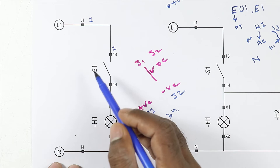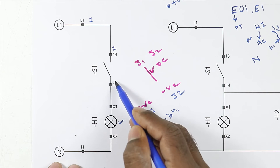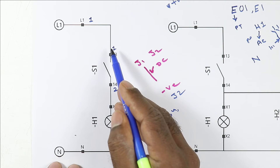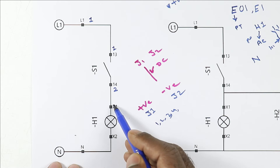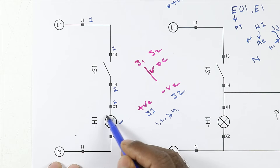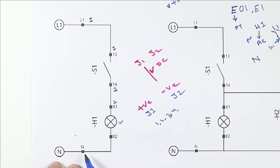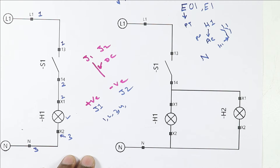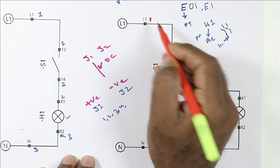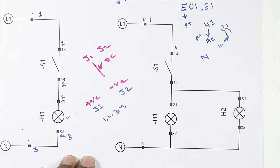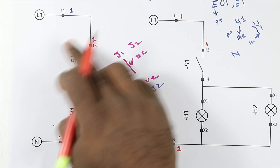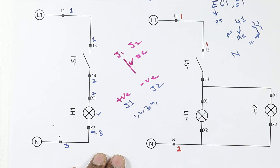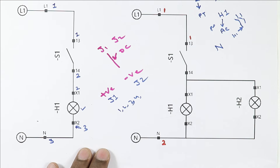After this, the switch is connected — we don't do any numbering on the switch itself because it is an electrical device. Below the switch a wire is connected, so we give this wire number 2. The other end of this same wire is also numbered as 2, at the lamp terminal. For the neutral power supply, we can give it number 3 — so this point is numbered 3 and the other point is also numbered 3. Now for the next circuit diagram, we do numbering in the same way: phase supply gets number 1, and neutral power supply can be given number 2.